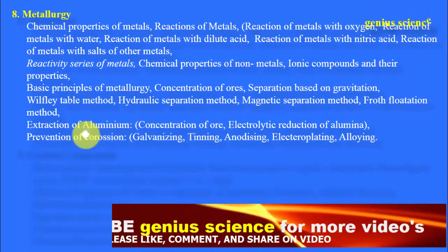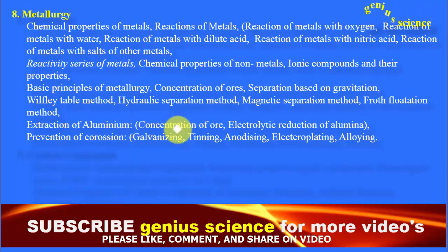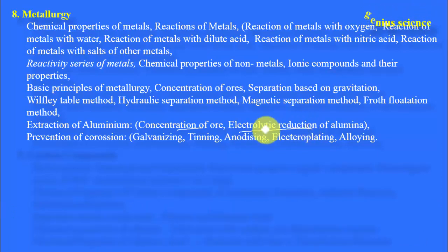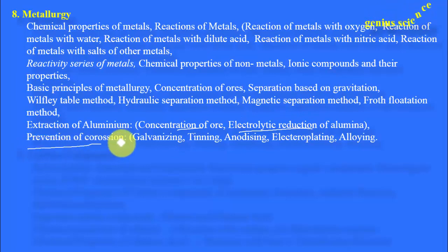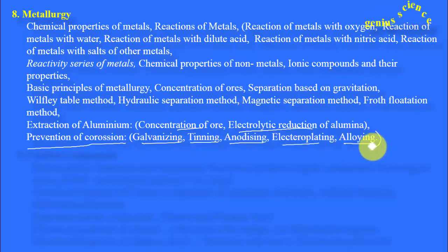One important example from metallurgy is the extraction of aluminium — the concentration of aluminium ores, electrolytic reduction of alumina, and then prevention of corrosion. This is also an important bit: galvanizing, tinning, anodizing, electroplating — these are important bits from this chapter.